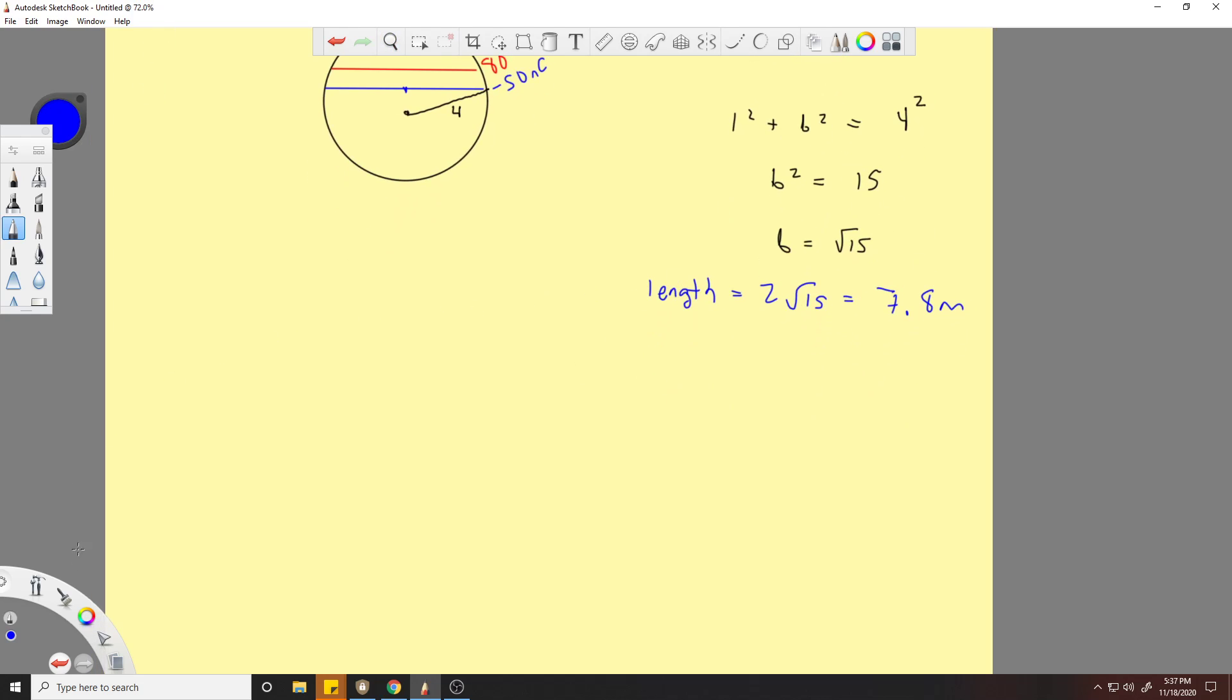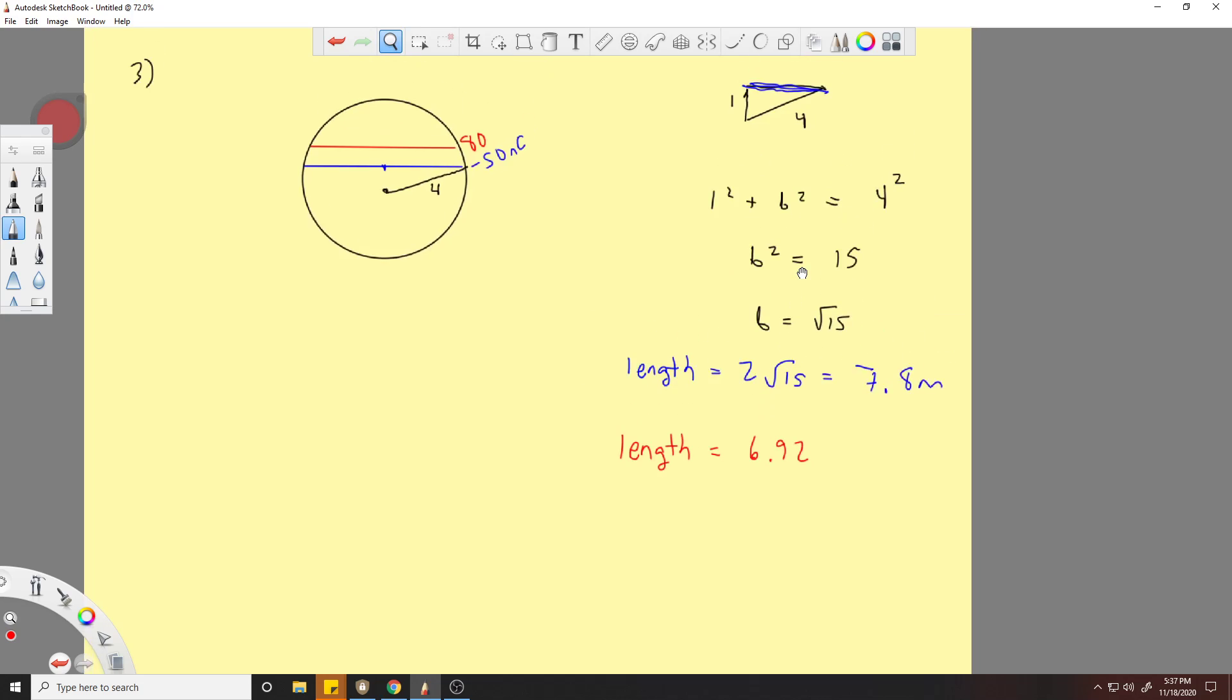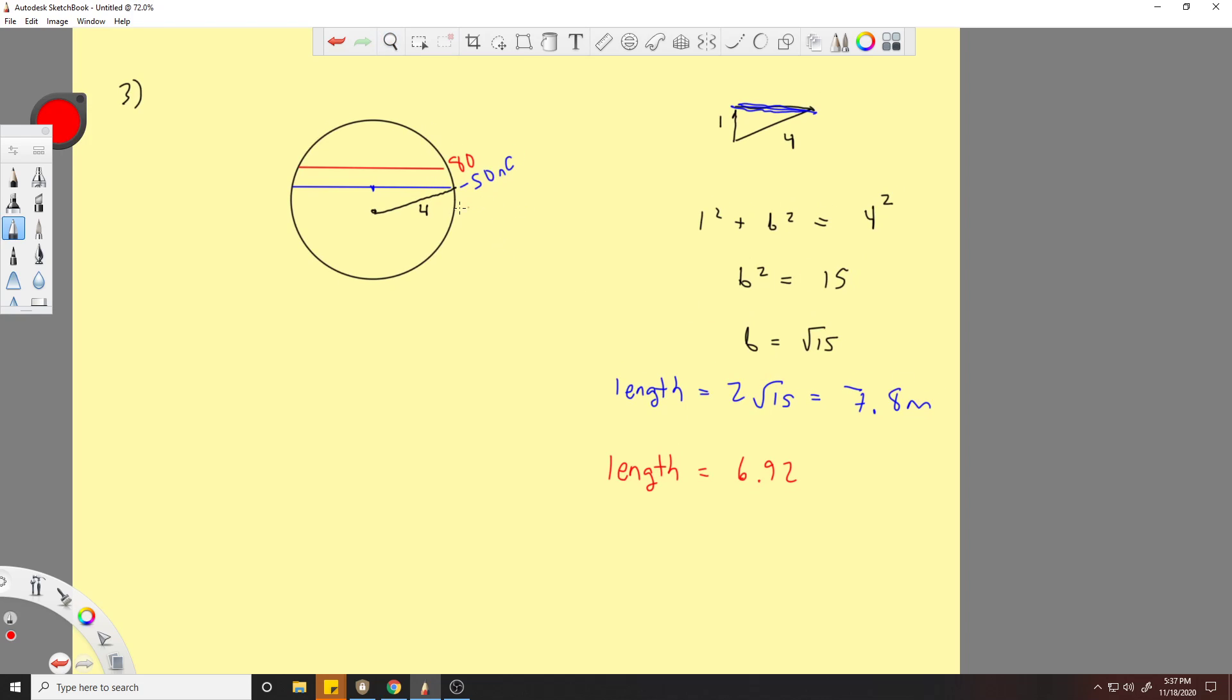Similarly we will get the length of the red line to be 6.92. I'm not going to do that math, but you can see that it's going to result in a triangle that's 4 and this will be a 2, and you do the same math right there.